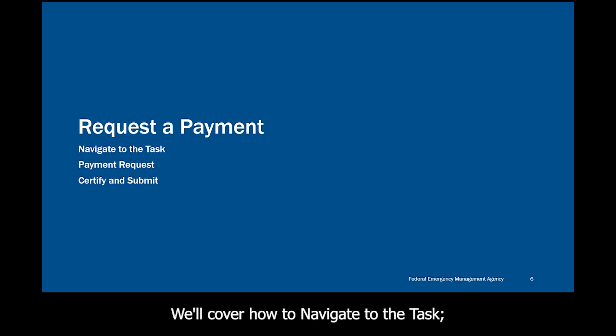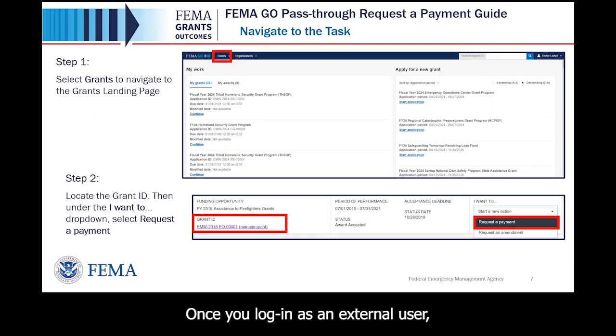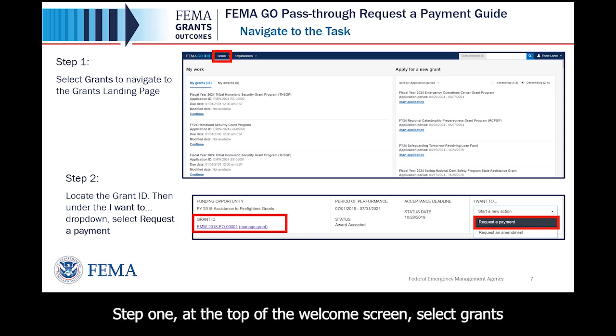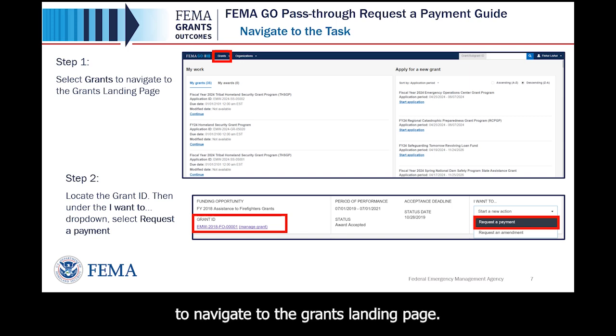Now let's walk through how to request a payment. We'll cover how to navigate to the task, request payment, certify, and submit the request. Once you log in as an external user, you will be directed to the Welcome screen. Step 1: at the top of the Welcome screen, select Grants to navigate to the Grants landing page.